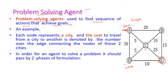Each node represents a city: A, B, C, D, E. The cost to travel from one city to another is denoted by numbers over the edges. For example, the cost to travel from A to B is 20, which may represent 20 kilometers. In order for an agent to solve a problem, it should pass through two phases of formulation.